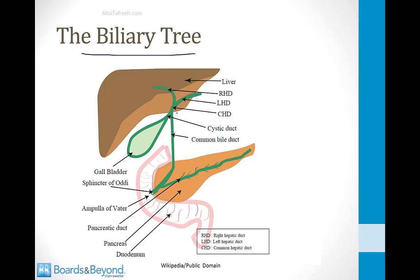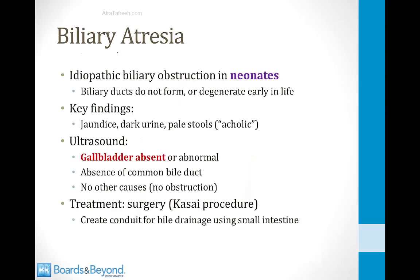Bile is formed in the liver and transmitted via the common hepatic duct into the gallbladder. Bile is stored in the gallbladder, and during a meal it is released via the common bile duct into the duodenum, where it passes through the sphincter of Oddi and the ampulla of Vater in order to reach the small intestine.